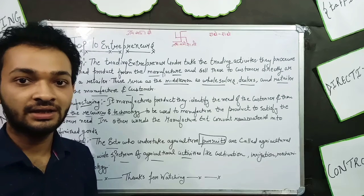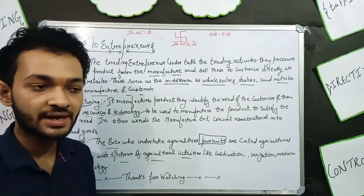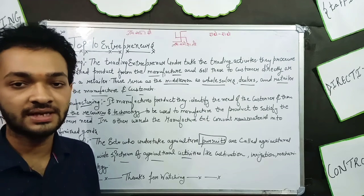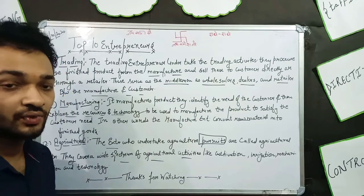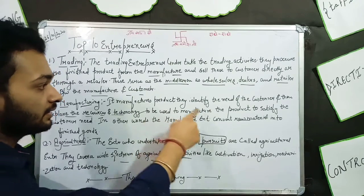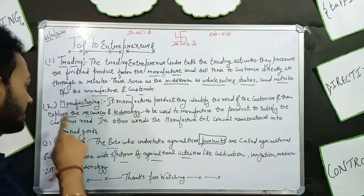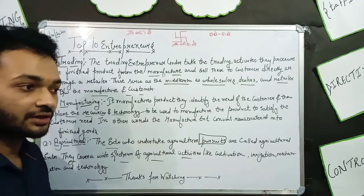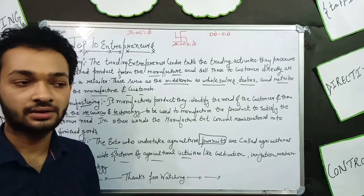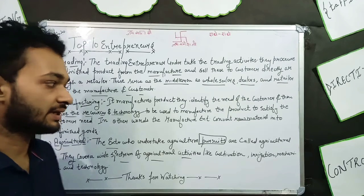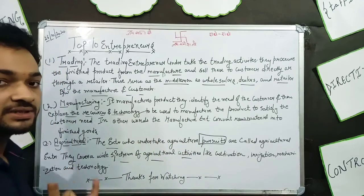They have it in their hands that they can build using any resources. They can build inferior quality or superior quality products. So firstly, they identify the need of the customer, and then they explore the resources and technology. Then they start to allocate the resources to be used to manufacture the product to satisfy the customer's needs.